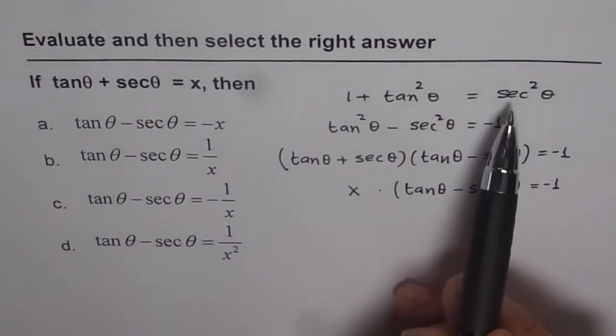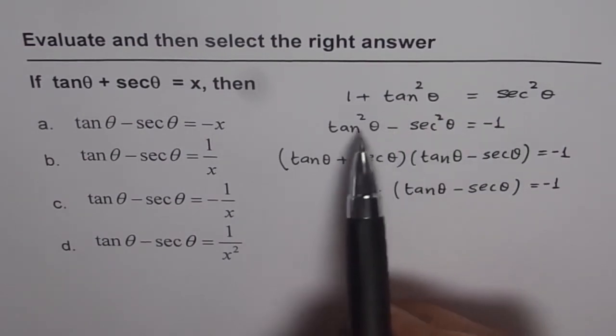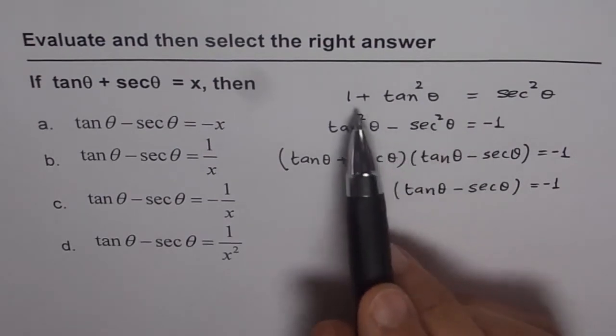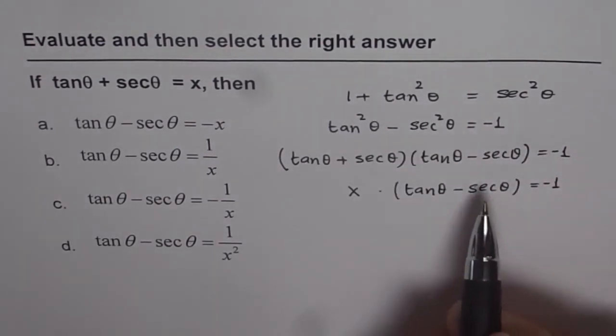So what we have here is, we brought secant to this side, so tan square theta minus secant square theta is minus 1, right? We took 1 to the other side. Well, now let us continue.